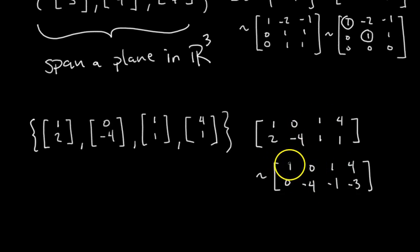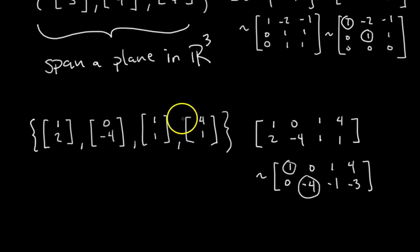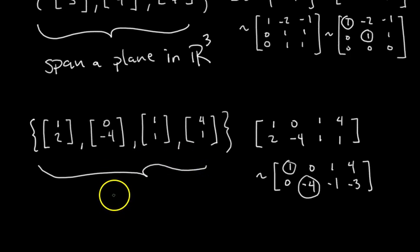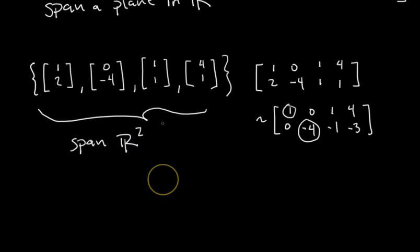Here's the matrix reduced to row echelon form. We identify how many pivots we have — two pivots, so the span is two-dimensional. A plane in R² is just all of R², so we can say the span of this set of vectors is R². These four vectors span all of R².